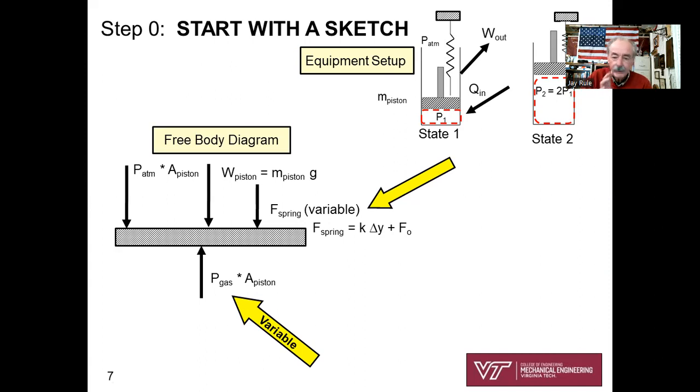So that equipment sketch should show you, I've got to find pressure, I'd better draw the free body diagram of my piston. I've got the weight of the piston, that's straightforward, the weight of the piston pushing down. I've got P of the atmosphere times the area of the piston pushing down, and now a third force, F of the spring, and that's going to be variable. And I've written out in my sketch, F of the spring is equal to K delta Y plus F0. Delta Y initially is zero, so F of the spring initially is F0, which is given. What's pushing up? P of the gas times A.